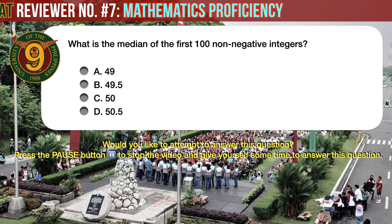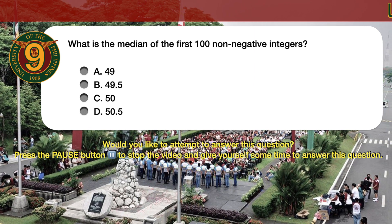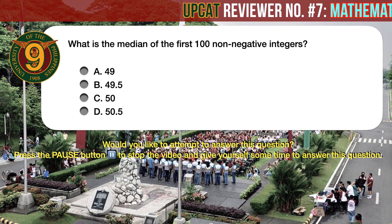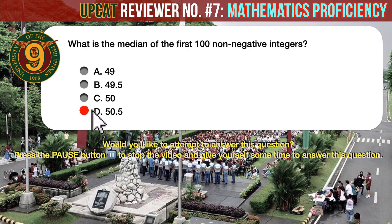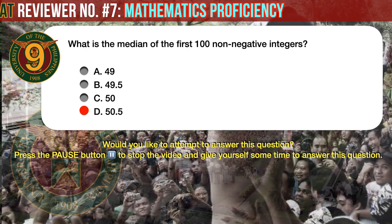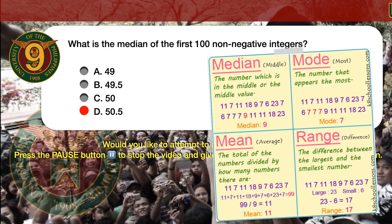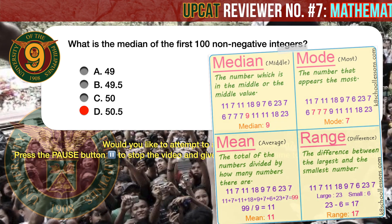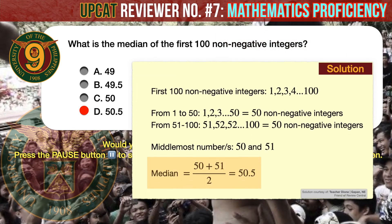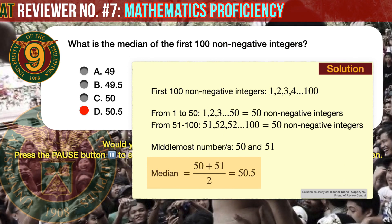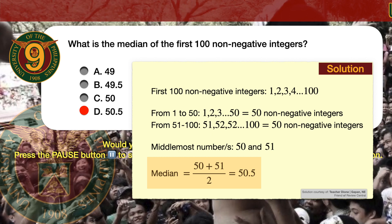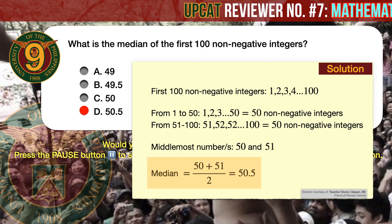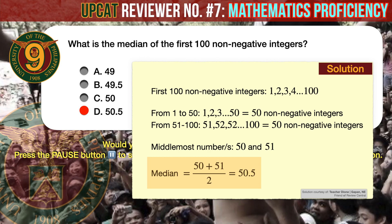Question number 9. What is the median of the first 100 non-negative integers? The correct answer is D, 50.5. The median is the middle value. The first 100 non-negative integers are 1, 2, 3, all the way to 100. From 1 to 50 there are exactly 50 integers, and from 51 to 100 there are also exactly 50 integers. The two middlemost numbers are 50 and 51. The median is their average, which is 50.5.